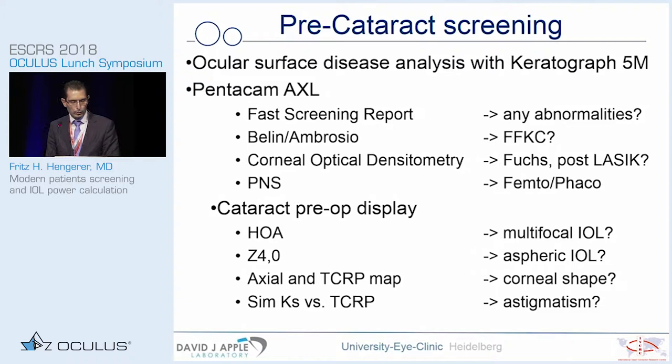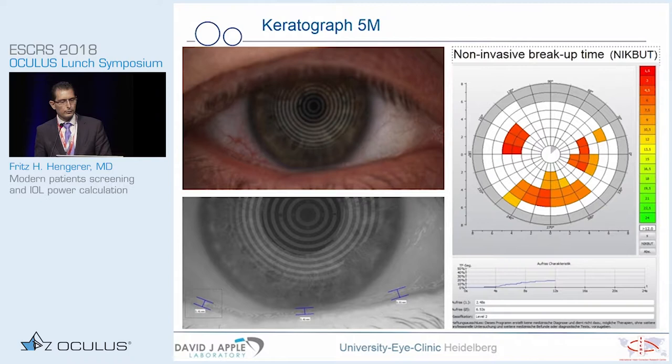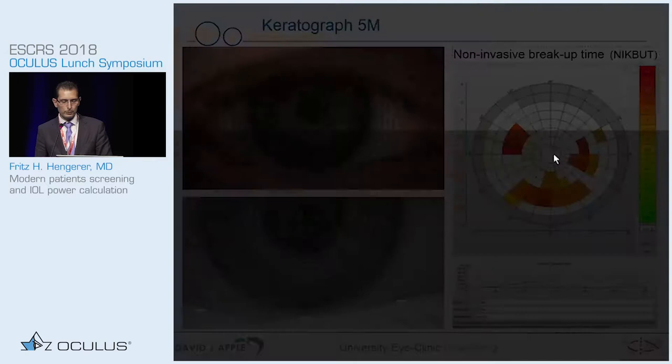Then we can open the cataract preoperative display, which we have just seen in Professor Conan's presentation, where we deal with higher order aberrations, asphericity, and the actual and total corneal refractive power map in order to analyze corneal shape with regard to toric IOLs, and the SimK versus total corneal refractive power to correct astigmatism values. This is a view from the Keratograph 5M, showing that some patients before cataract surgery have dry eye spots that must be treated before reliable measurements can be performed with the Pentacam.